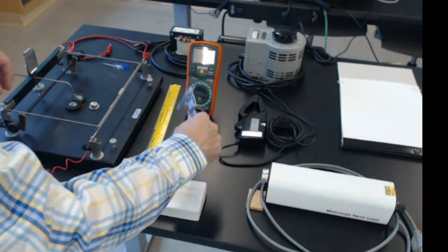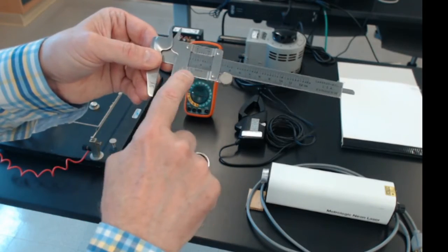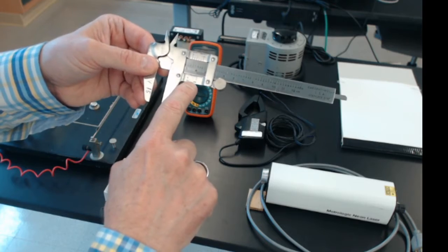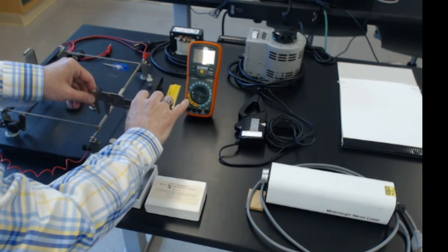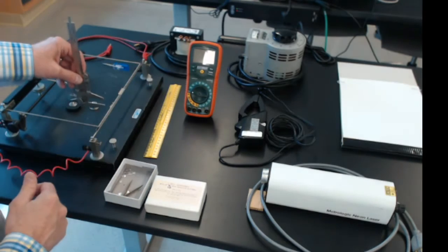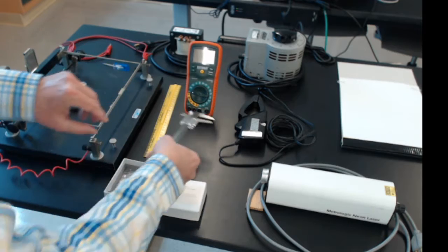We've got a caliper with a vernier scale here. I'll explain how that works. And we can use that to measure the diameter of the wires, and we'll also use it to measure the spacing between the wires. And I'll go into more detail about that.